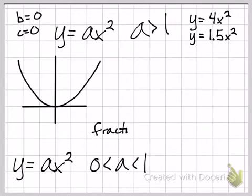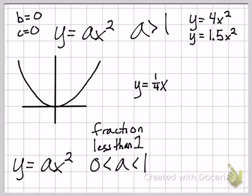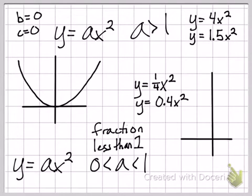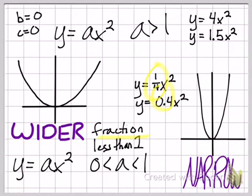And then, let's say the value of a is less than one, but greater than zero. So basically a fraction. That could be like one-fourth or .4. That kind of parabola would be more narrow. So again, the original shape is kind of wider like that. But because you have a fraction as the value of a, you get a parabola that's more narrow.